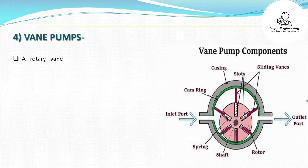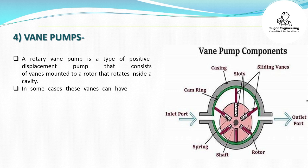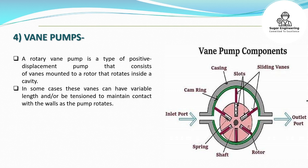4. Vane Pumps: A rotary vane pump is a type of positive displacement pump that consists of vanes mounted to a rotor that rotates inside a cavity. In some cases these vanes can have variable length and/or be tensioned to maintain contact with the walls as the pump rotates.